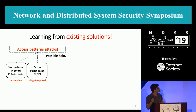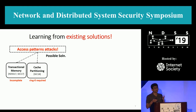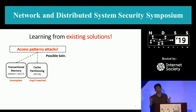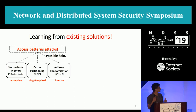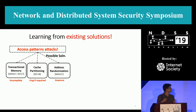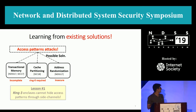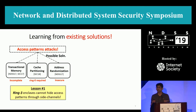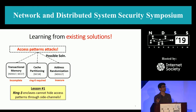Another solution recently proposed was cache partitioning. Cache partitioning is a good solution, but it requires ring zero privileges — basically operating system level privilege — which the enclave does not have. Another possible solution is to randomize the address, but that's a probabilistic defense — it's not deterministic enough. So the first lesson we learned is that it's really hard for enclaves to hide access patterns because they're not privileged enough.